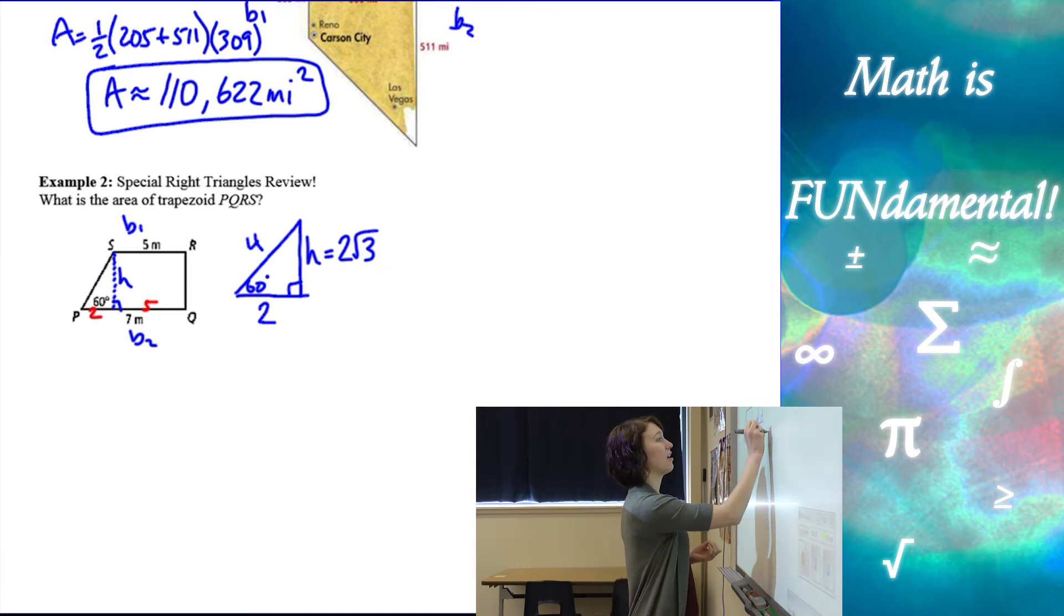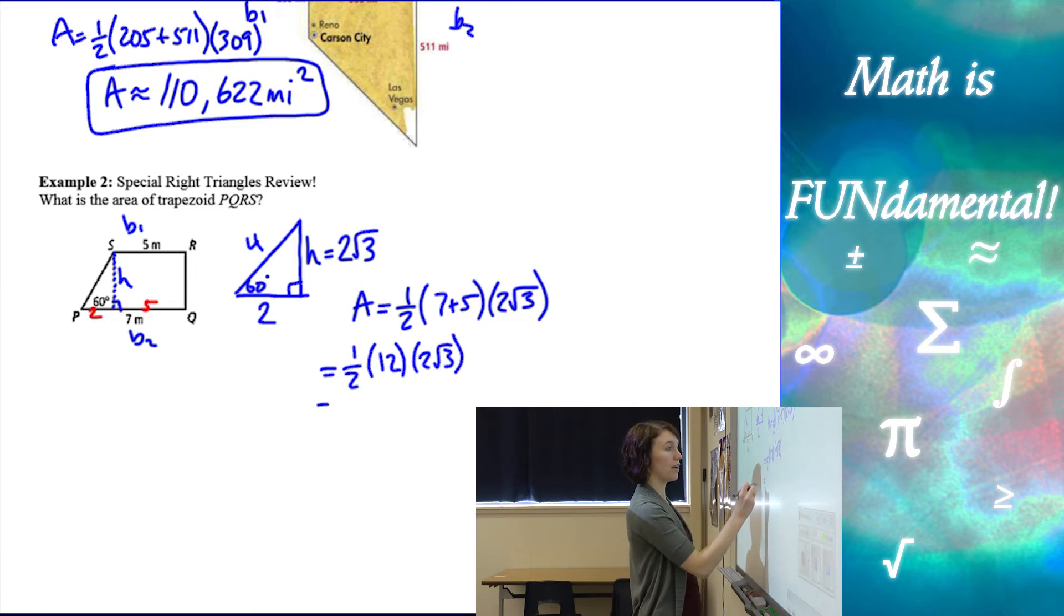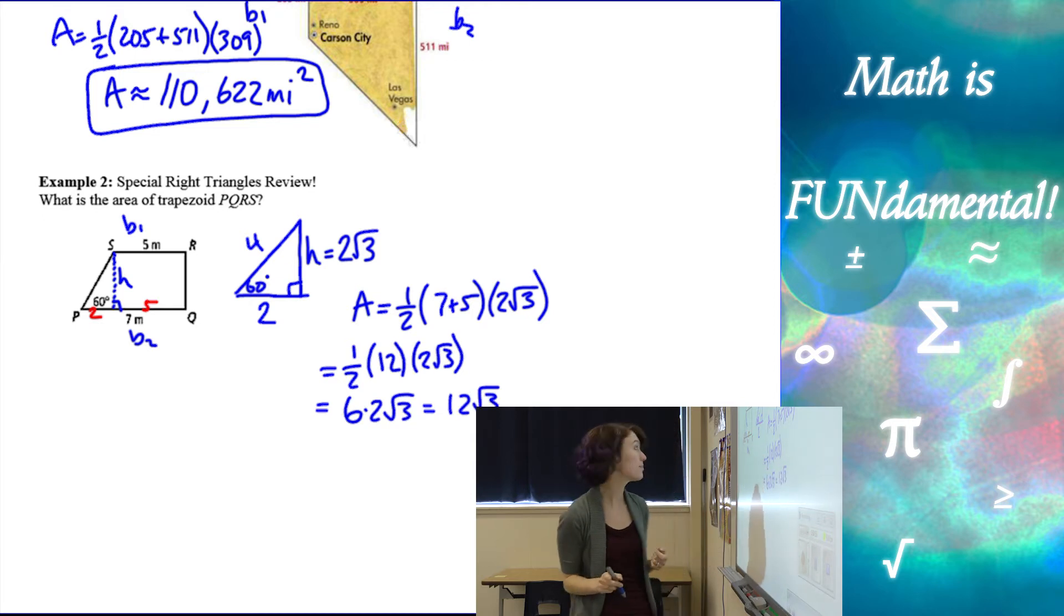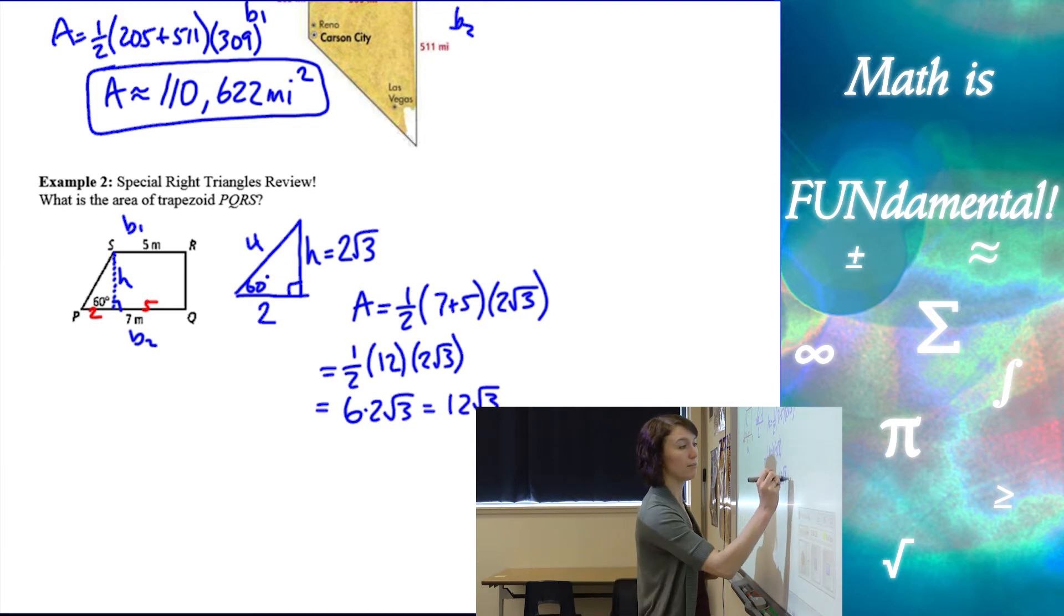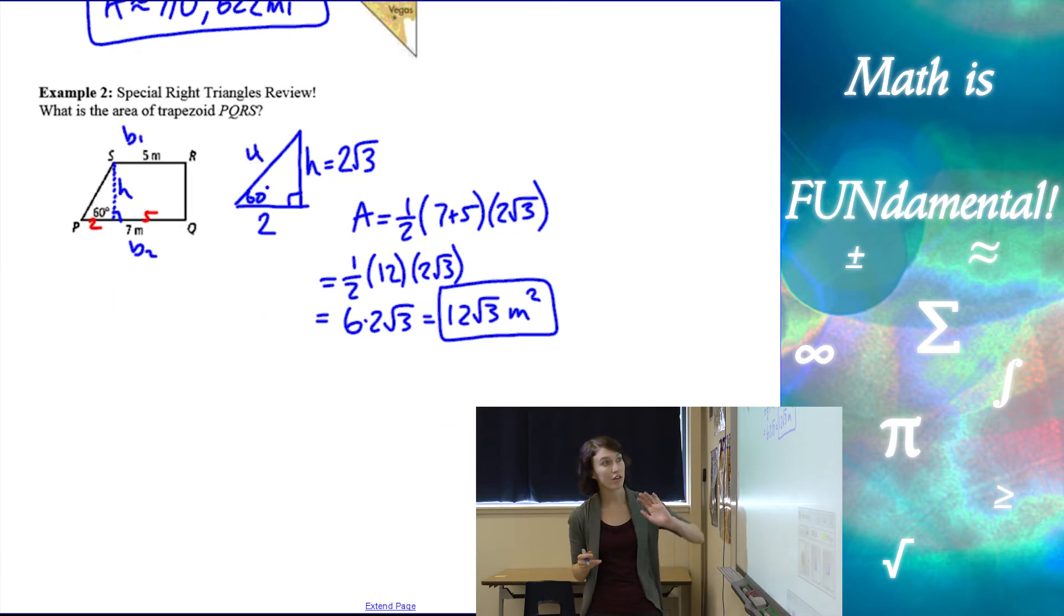All right, so now we have our bases and our height. So my area of this trapezoid is going to be one half seven plus five times two root three. So I have one half of 12 times two root three, which is six times two root three, which is 12 root three. And we always put our units, which in this case are meters and it's area. So we square our meters. So there is our area of our trapezoid.